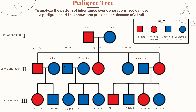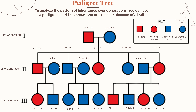Their female child is affected by the trait while another female child is not, and the last female child is. So of their five children, three have the trait while two do not. Looking at the next generation, when the affected male is with an unaffected female, their offspring are half and half — one is an affected female, the other is an unaffected male. Where two unaffected individuals pair up, all of their children are unaffected.